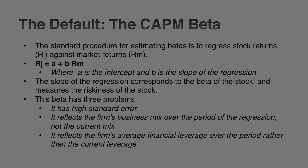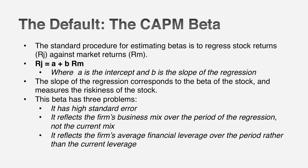I'm going to start with the CAPM beta because much of what we know about valuation is still built around it. In the CAPM, all exposure to market risk or macroeconomic risk is captured in one number — the beta. We've all been taught how to estimate beta in exactly the same way: run a regression of returns on the stock against returns on a market index, and the slope of the line is the beta. That should be pretty simple, right? So let's try this out.